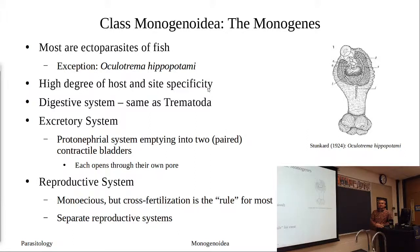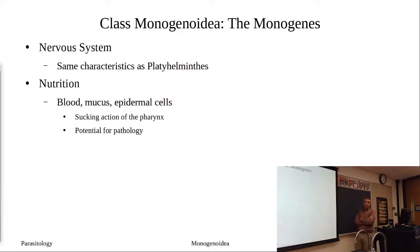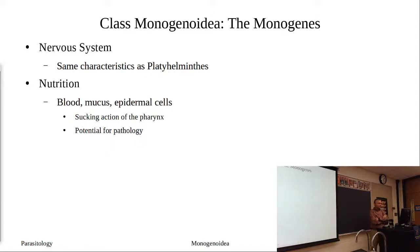The nervous system is the same basic characteristic of the body plan in helminths — that's going to be a theme even in the cestodes. You have your nerve ganglia at the anterior end and two nerve cords running down. Nutrition, however, is going to be a little bit different.